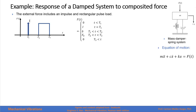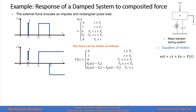In this example, we want to find the response of a damped system to a composite force. The force is composed of an impulse at T sub 1, and then a rectangular pulse between T2 and T3. This is the piecewise function, and we can decompose this force by superposition as: the impulse, plus a step function at T2, minus another step function at T3.